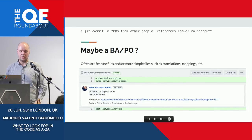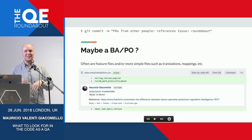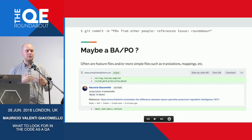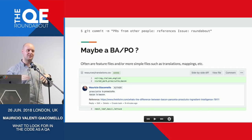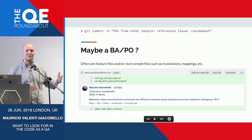Reviewing for POs or BAs: sometimes they are technical enough to do some pull requests and commit things like translations, mappings, or feature files. You can help them by reviewing that kind of thing. It's always nice to point to a reference, because this person normally doesn't know everything they're doing — they're probably just trying to help the team by using version control. So it's nice to point them to a specific reference so they can verify what you're saying.